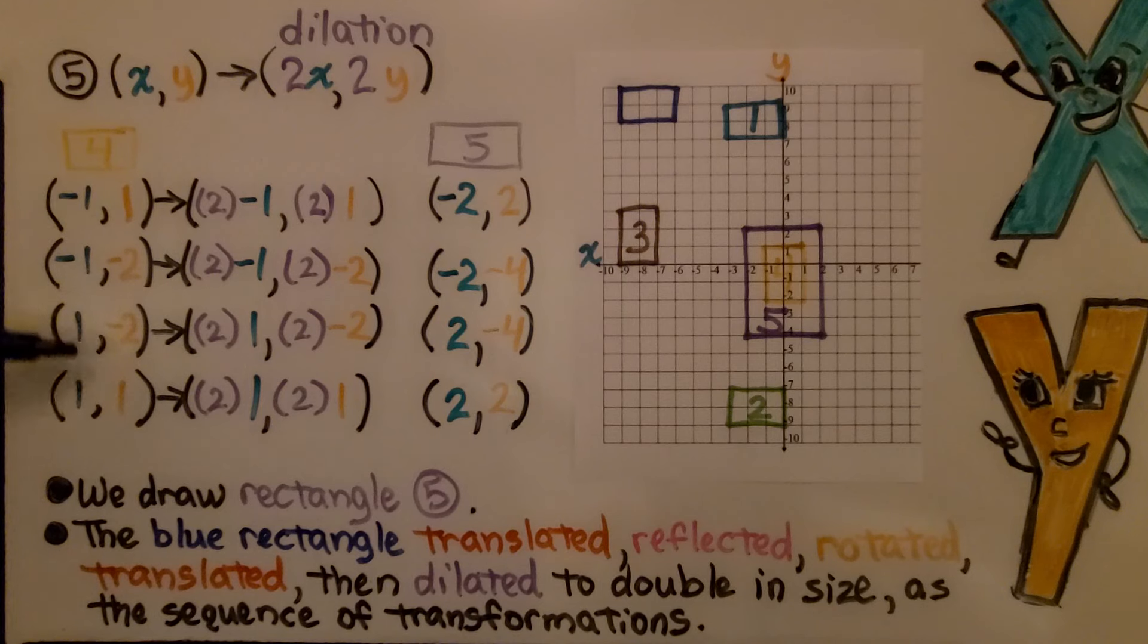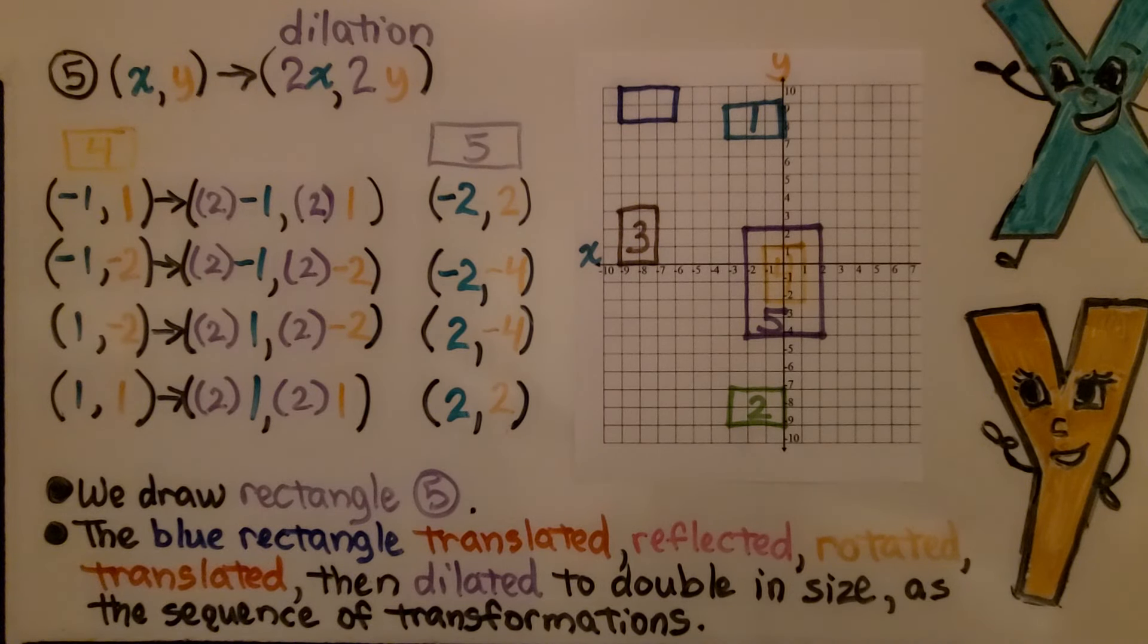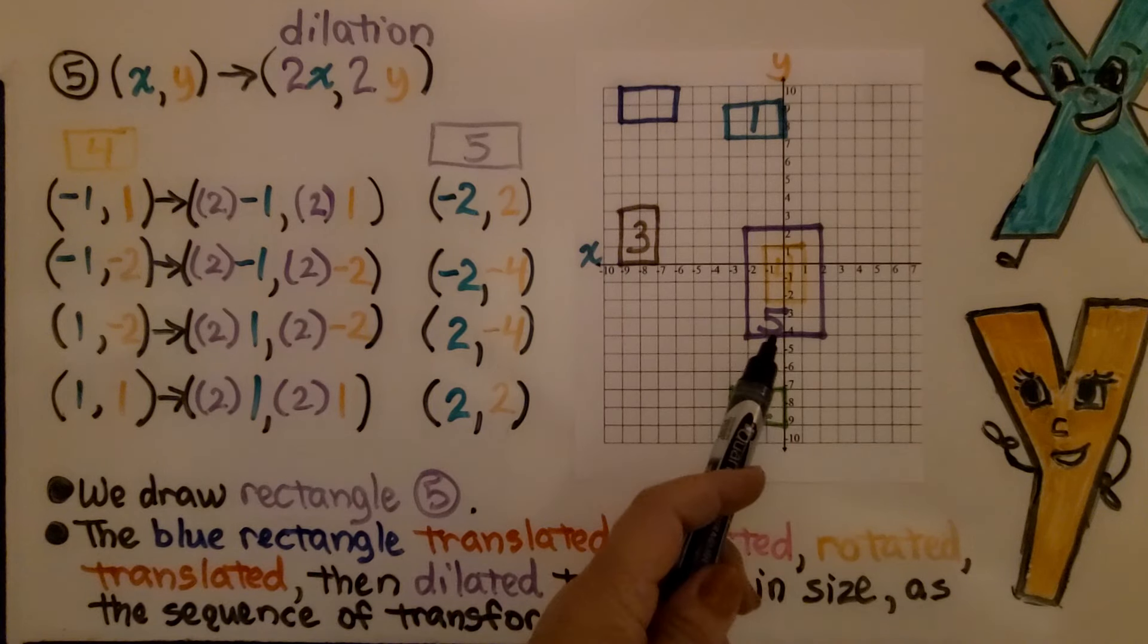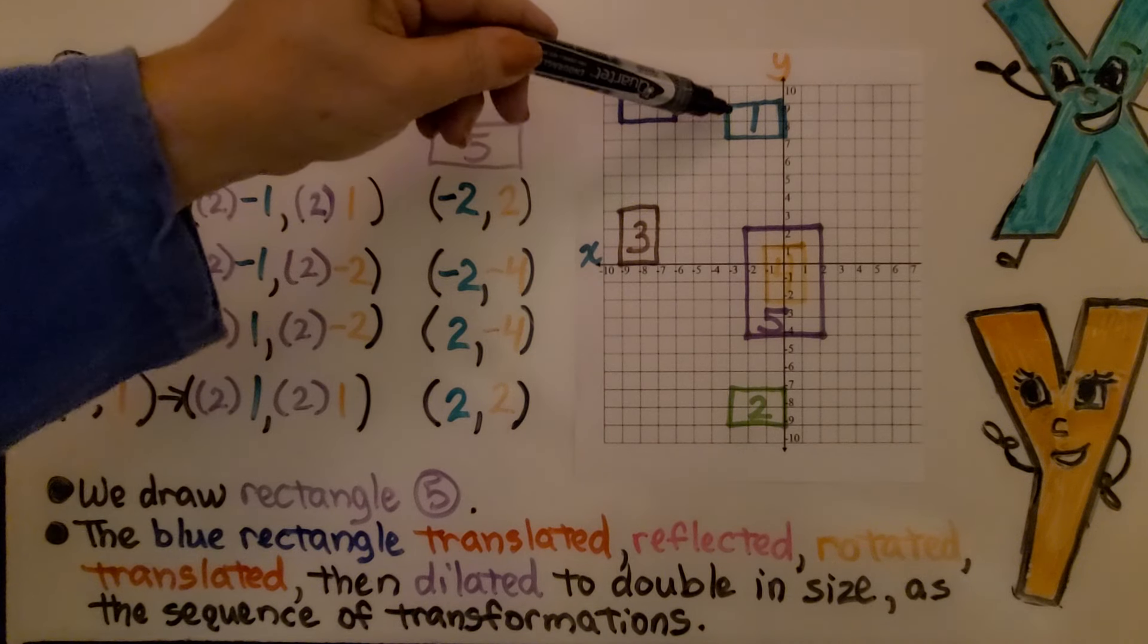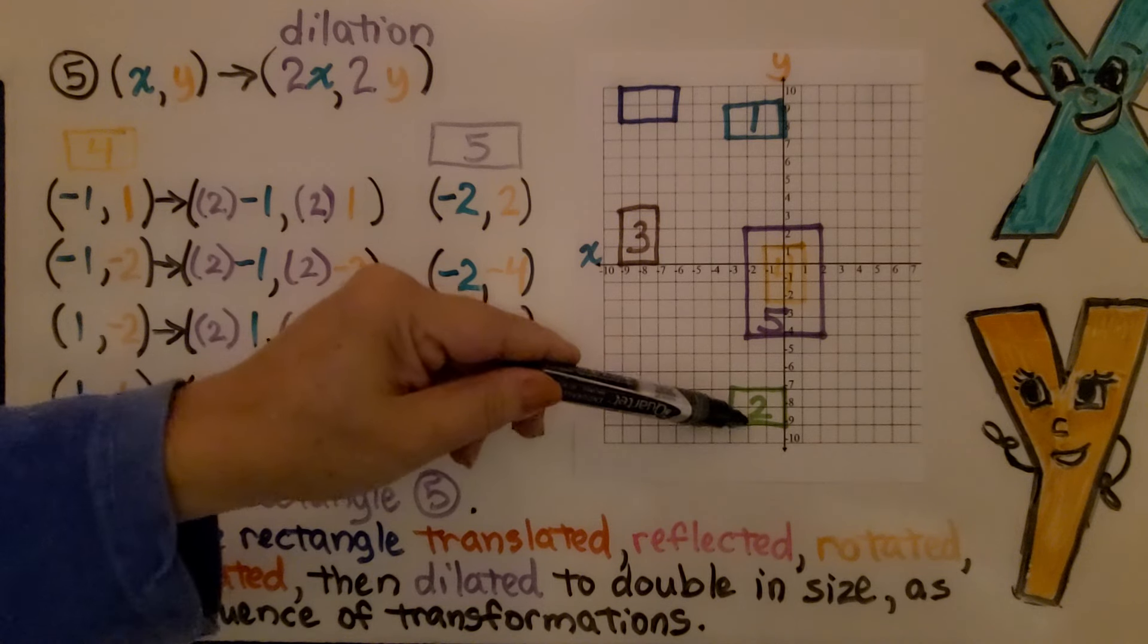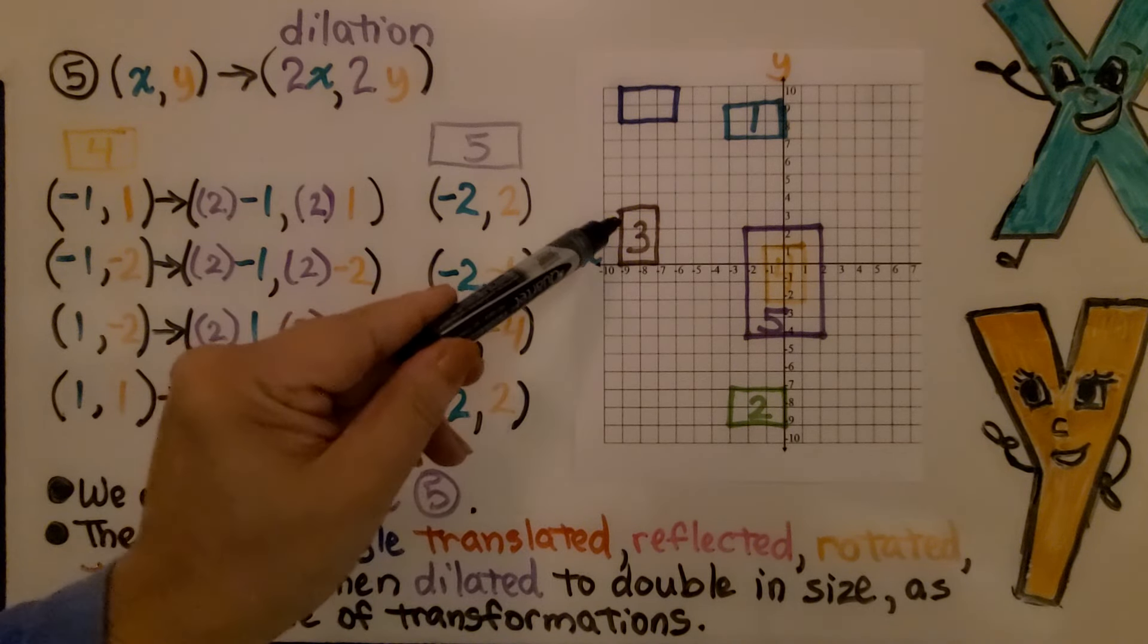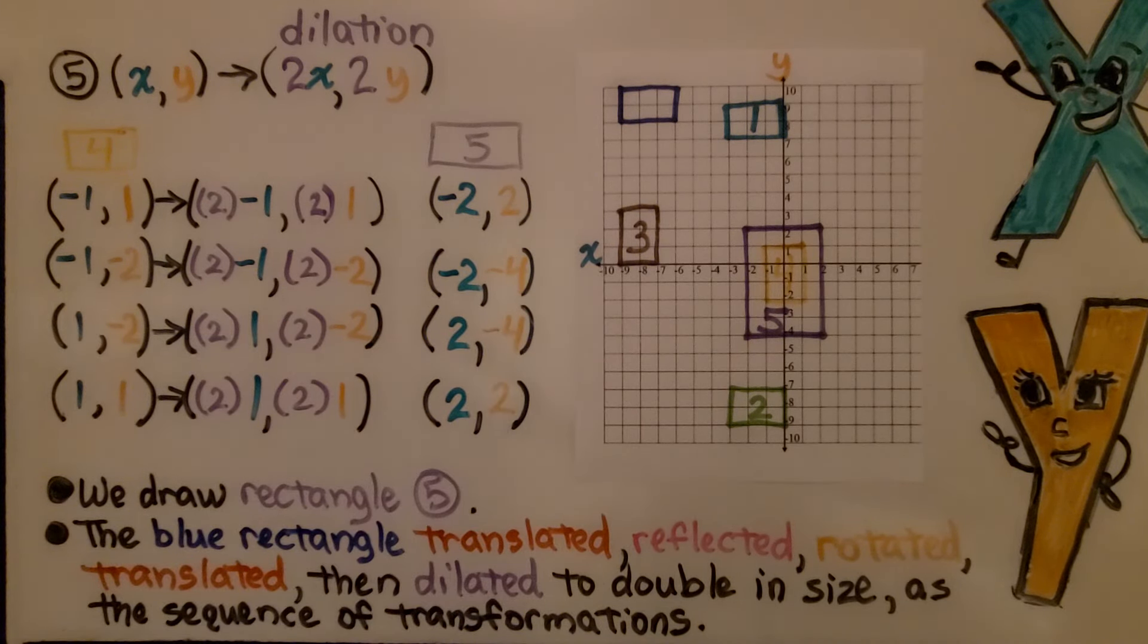We take the ordered pairs from the previous number 4 rectangle, and we're going to multiply each x value by 2 and each y value by 2. We get all the ordered pairs for our fifth final rectangle. We draw rectangle number 5, and the blue rectangle translated to number 1, then it reflected across the x-axis to number 2, then it rotated 90 degrees to number 3, then it translated to the yellow number 4, and then it dilated to double in size as the sequence of transformations.